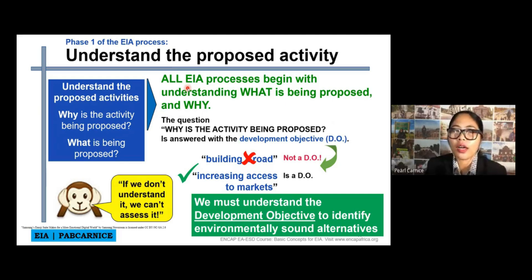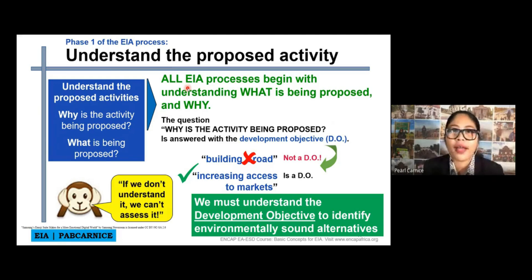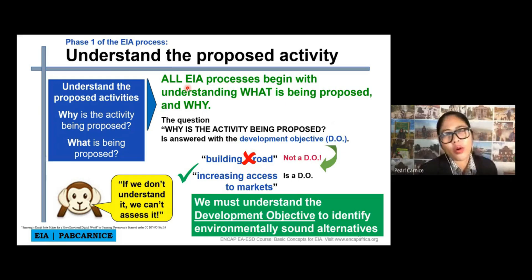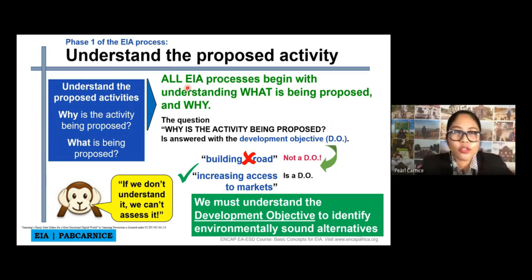It should not just be answered as 'building a road' — it should be 'increasing access to markets.' We must understand that the development objective is to identify environmentally sound alternatives, not just building the road. For example, increasing access to markets or lessening the number of hours of travel — that is a developmental objective. So what if we are going to build a road? The higher outcome of building the road is what matters. Your EIS report will be better accepted by the EMB-DENR if you have a development objective such as increasing access to markets or decreasing travel time.